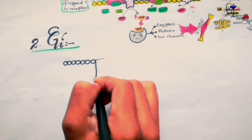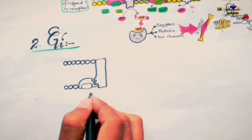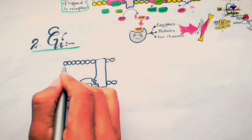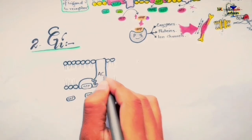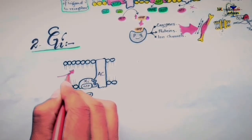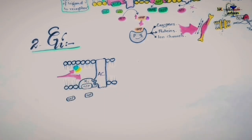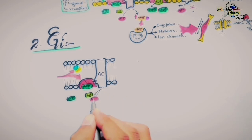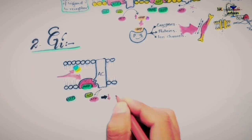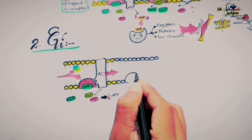Another type is Gi G-protein-coupled receptors, which are inhibitory in nature, meaning they decrease cAMP levels inside the cell. When a ligand binds, the alpha subunit dissociates and interacts with adenylyl cyclase, but instead of activating it, they inhibit it, so adenylyl cyclase remains inactive. These receptors have a different type of alpha subunit called alpha-i, unlike the alpha-s of Gs-coupled receptors.